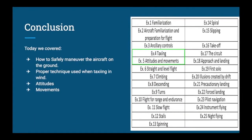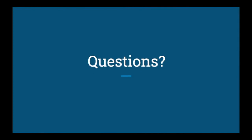Today we covered taxiing, attitudes, and movements. The next lesson will be straight and level flight. Your homework is to read up on that in the flight training manual, and we will go over straight and level flight prior to our next flight. If you have any questions about this lesson, feel free to leave them in the comments below and I will answer them.